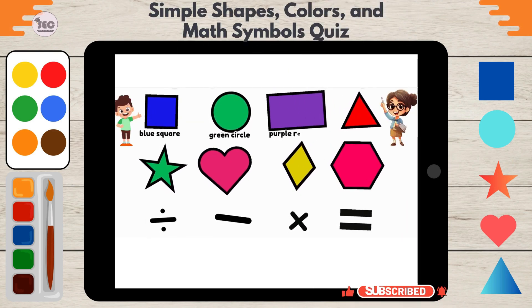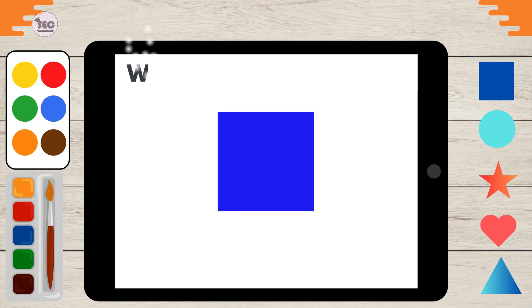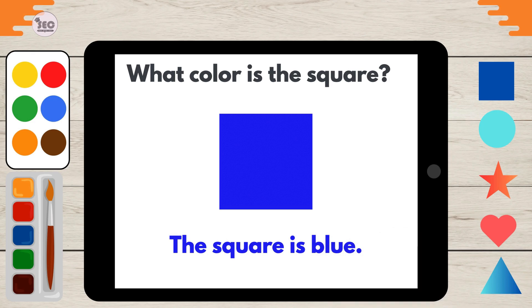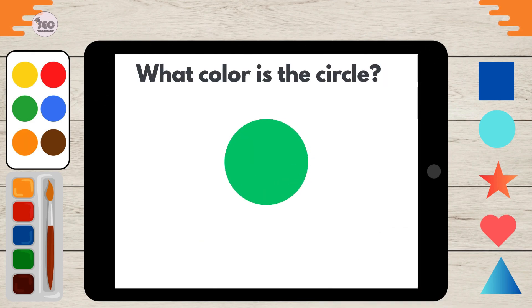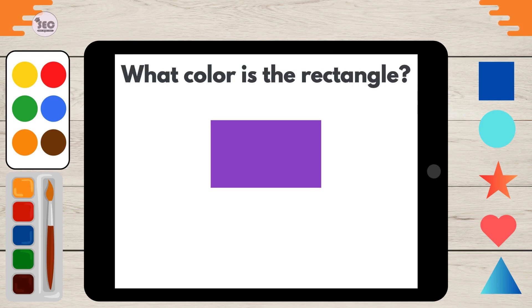Simple shapes, colors, and math symbols quiz. Are you ready? Let's get started. What color is the square? The square is blue. What color is the circle? The circle is green. What color is the rectangle?